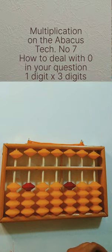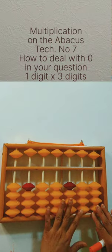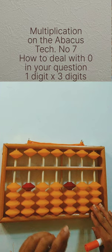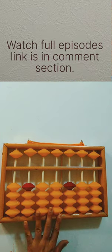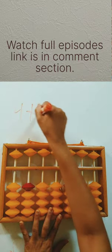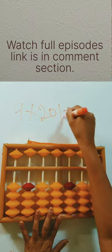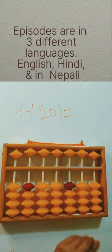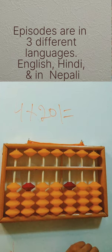There are seven basic techniques of multiplication on the abacus and this is the last one. Our question is four multiplied by 201, and how to deal with zero if you have it in your questions. There are four digits.